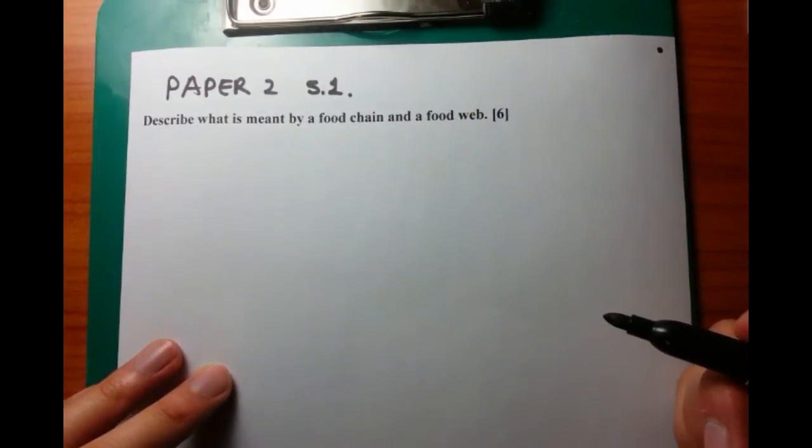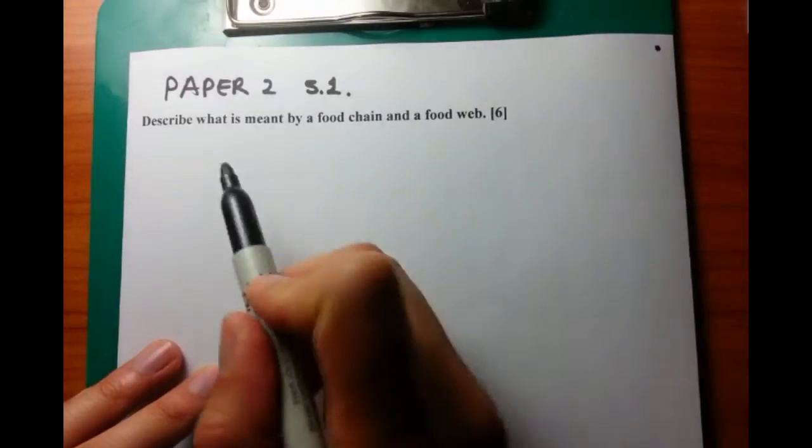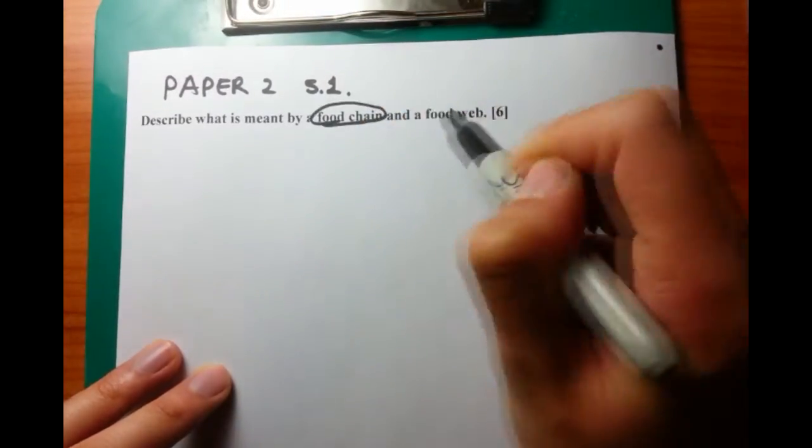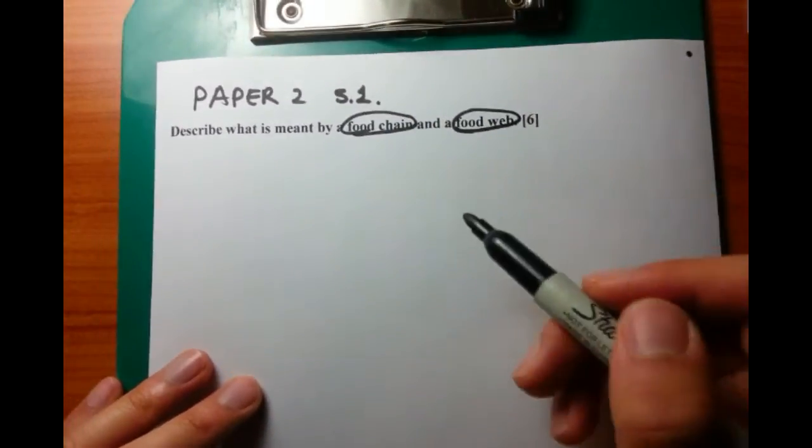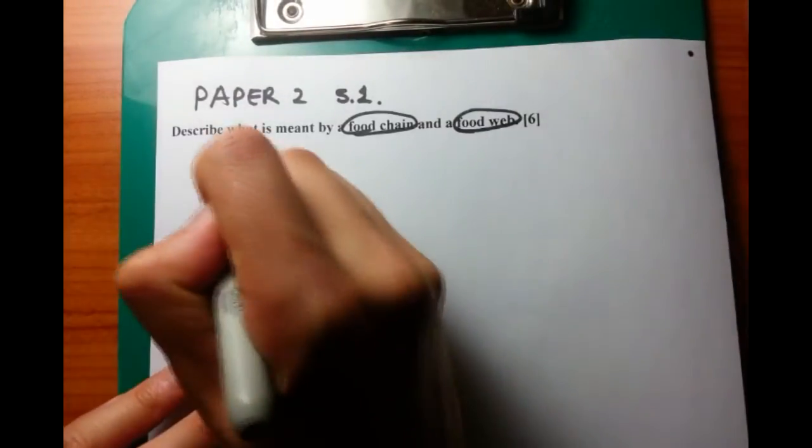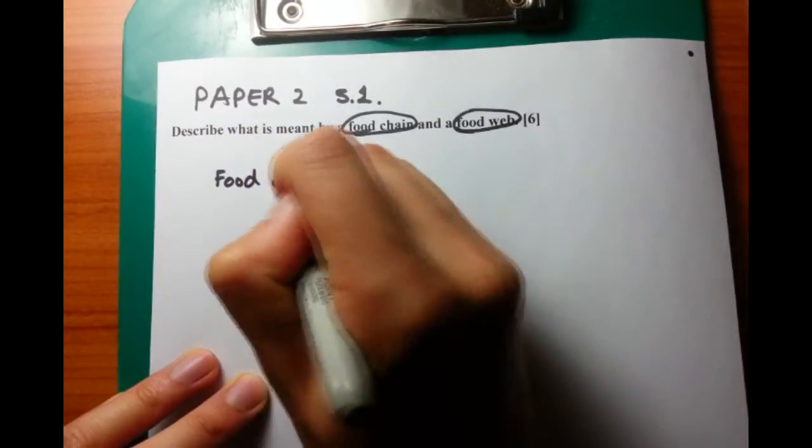So for this question, it's a simple question. Describe what is meant by food chain and food web. Straight away we know from this particular question that there are going to be two parts. First of all, we have to talk about food chain. Then we have to talk about food webs.